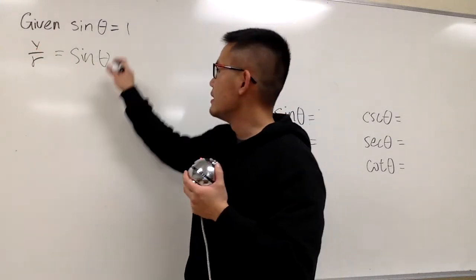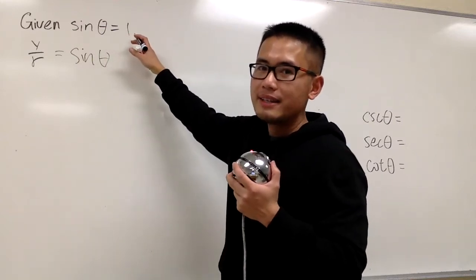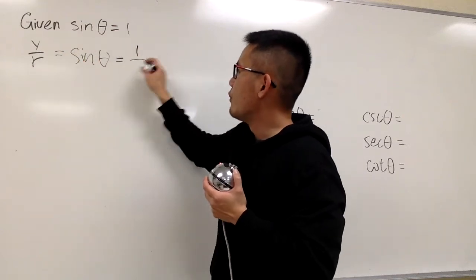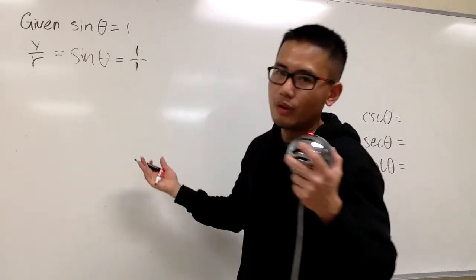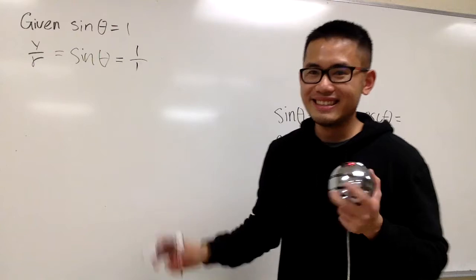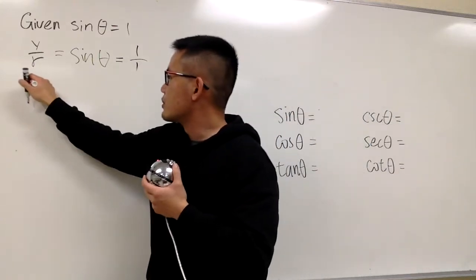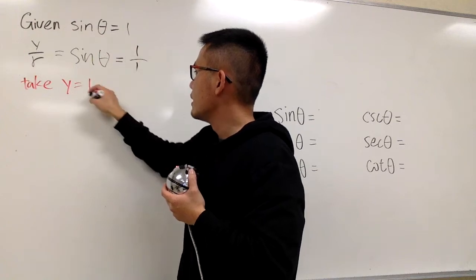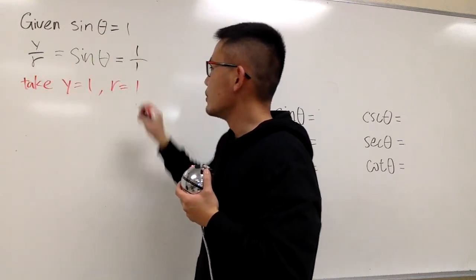As you can see, this is 1, right? I have to look at this as a fraction, so I can only write this down as 1 on the top over 1 on the bottom. 1 over 1 is the same as 1. In this case, I can just go ahead and say, let's take y is equal to 1, and r is also equal to 1.